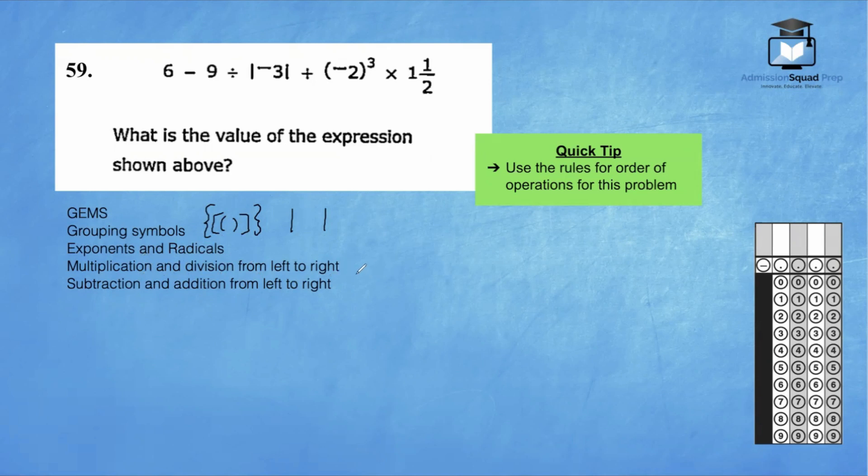So let's start off with our grouping symbols. We take a look and we do see that there is an absolute value of negative 3. We also have this negative 2 here in the parentheses. But for this case, it's actually an exponent. Let's simplify what we have so far. So we have 6 minus 9 divided by positive 3 because the absolute value of negative 3 is 3. Remember, absolute value just means the distance from 0. So the number negative 3 is 3 units from 0. So we change it to a positive 3.